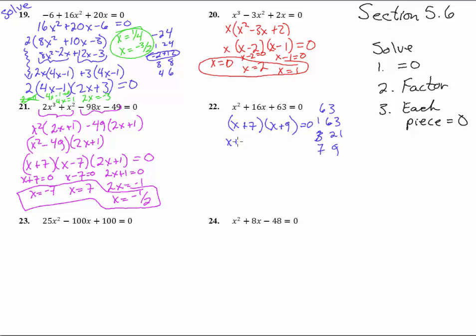So that will give us, set this piece equal to 0, and we get x equals negative 7. And then this piece equal to 0, and we get x equals negative 9. So we get two answers there.